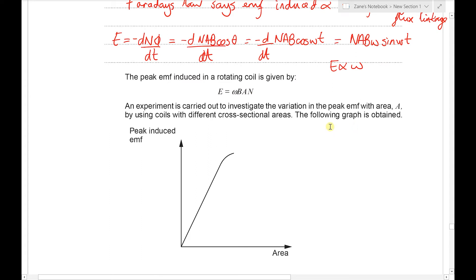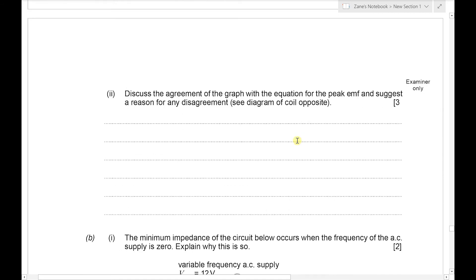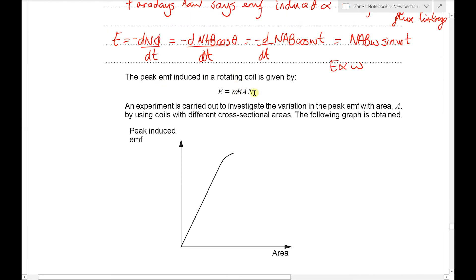Then an experiment is carried out to investigate the variation in peak EMF with area A by using coils with different cross-sectional areas and the following graph is obtained. We're going to discuss the agreement of the graph with the equation for the peak EMF and suggest a reason for any disagreement. So what we're saying is that that peak EMF will be directly proportional to the area because the ω, B and the N are constants.